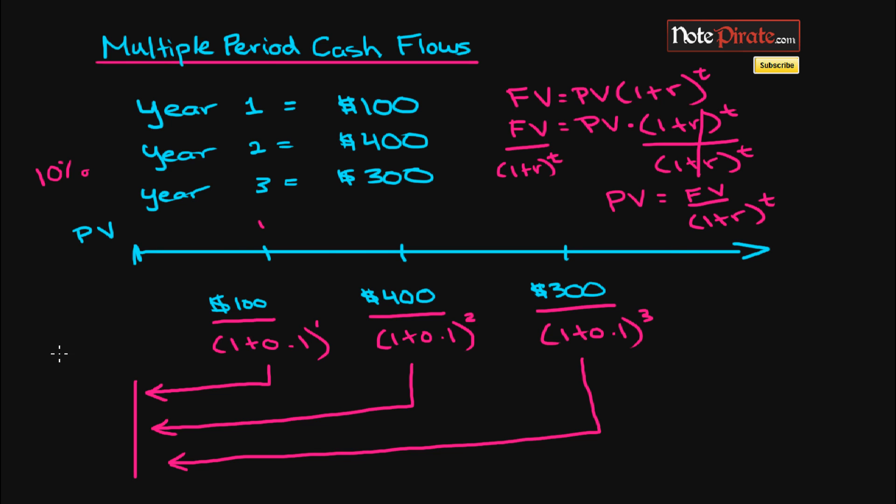But the three individual numbers will be $90.91 for the $100 in the first year. The second one will be $330.58, and the third one will be $225.39. Altogether, that's going to give us a present value of $646.88.